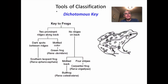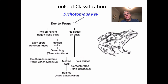A third example shows a key that looks different but works exactly the same way. Don't get stressed — you still look at the organism and are given two choices. In this case: two prominent ridges along the back, or no ridges. This organism has two prominent ridges. Then: dark spots between the ridges, or a mottled color. You can clearly see dark spots between the ridges. This leads to both the scientific name and common name of this frog: the southern leopard frog, Rana sphenocephala.